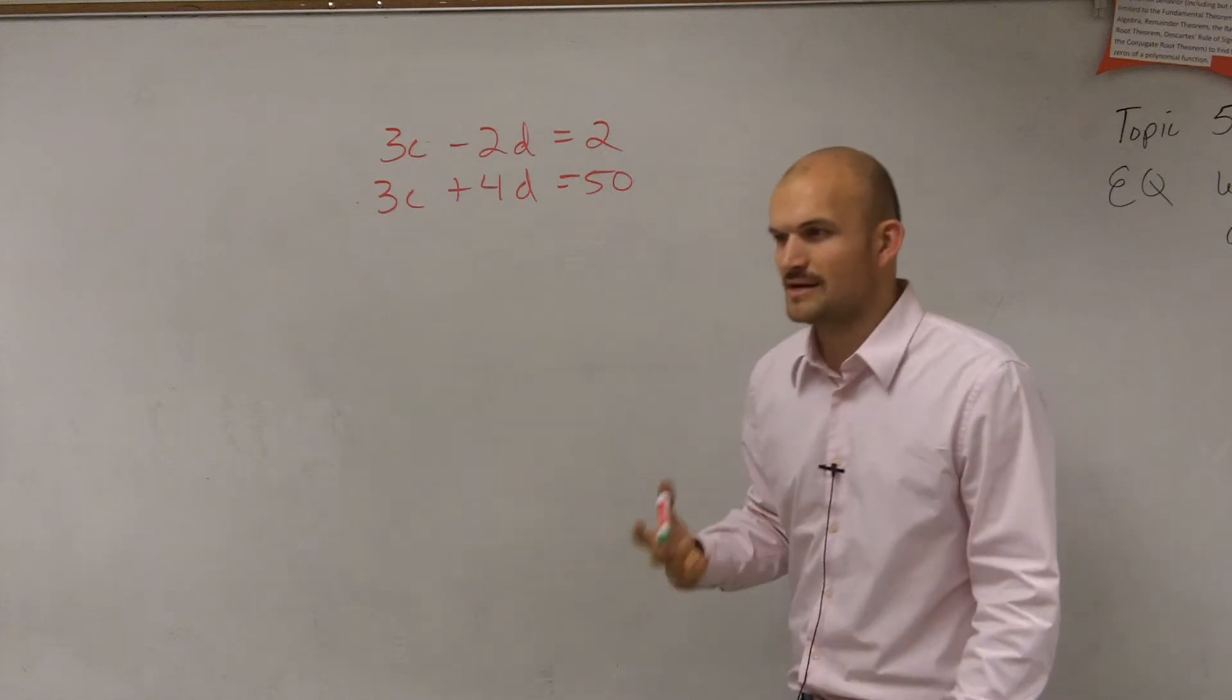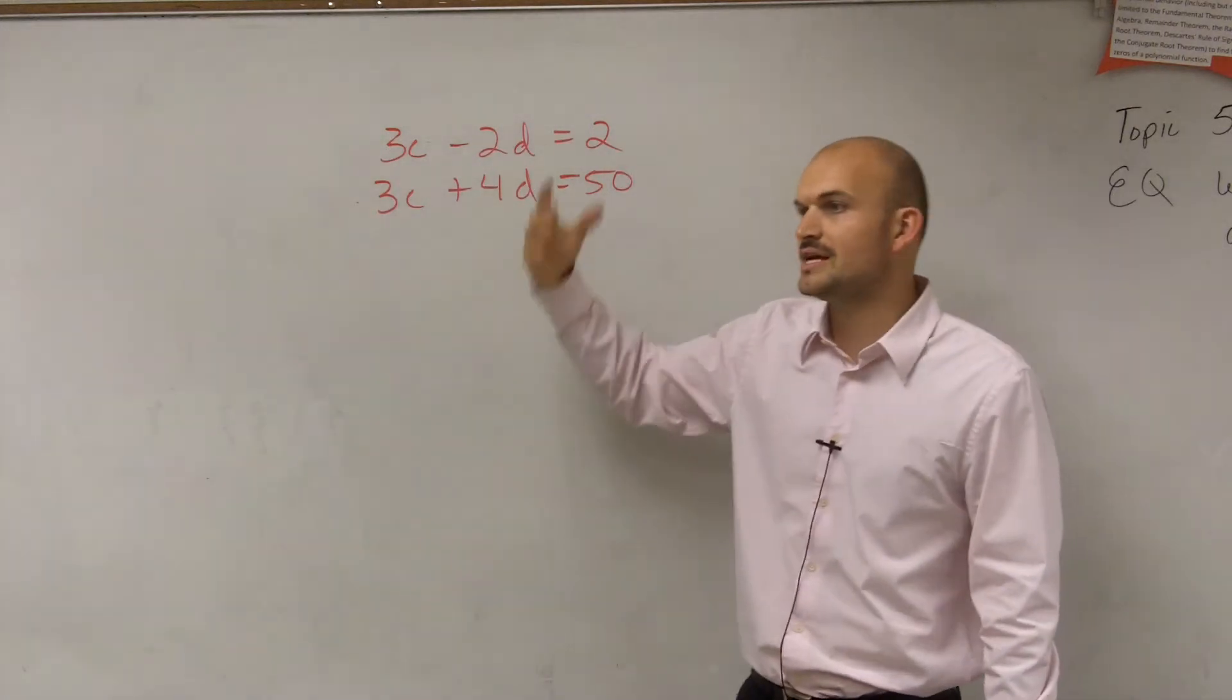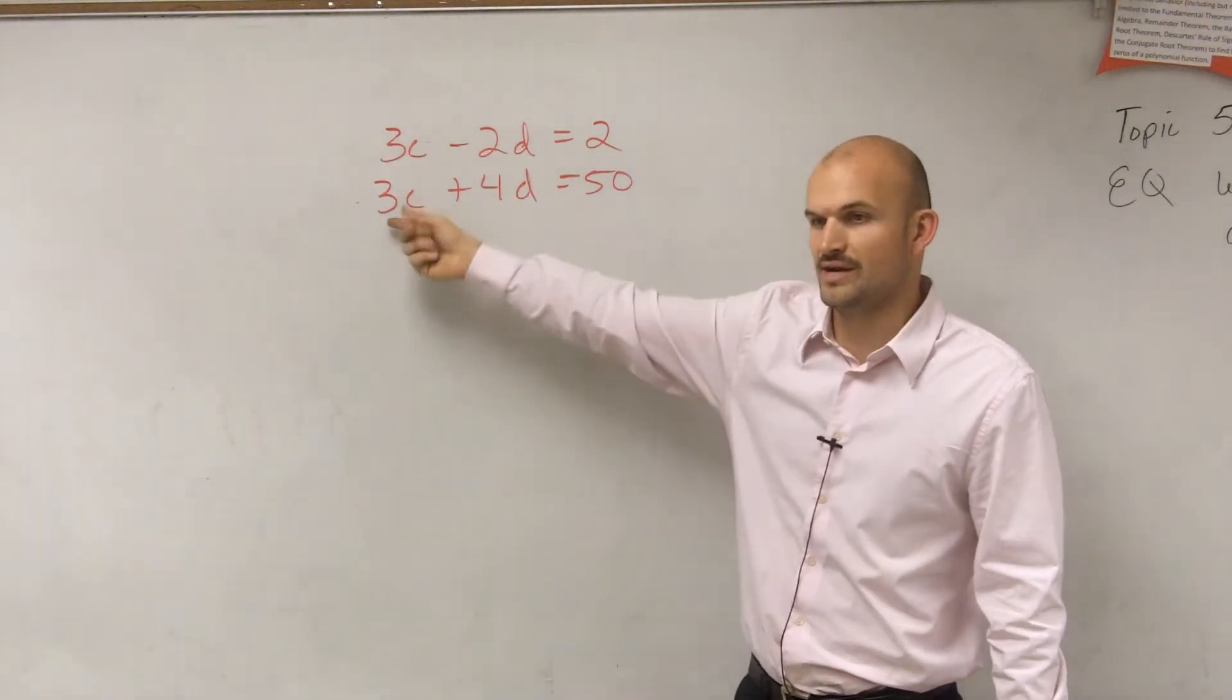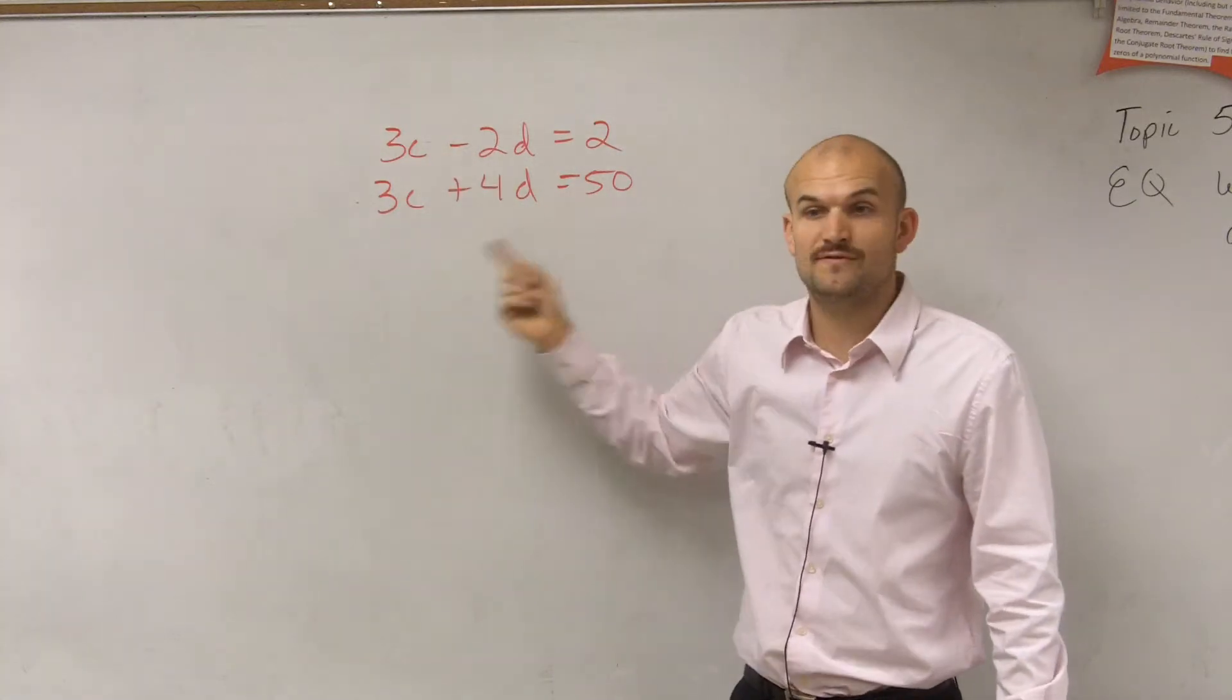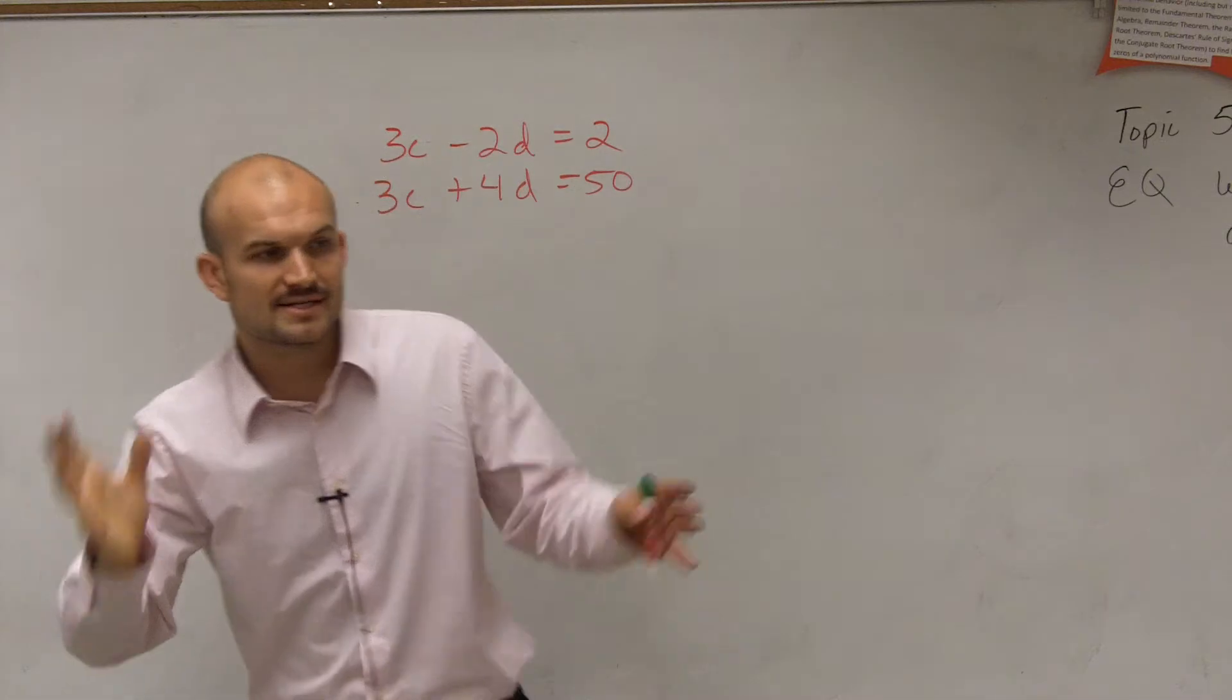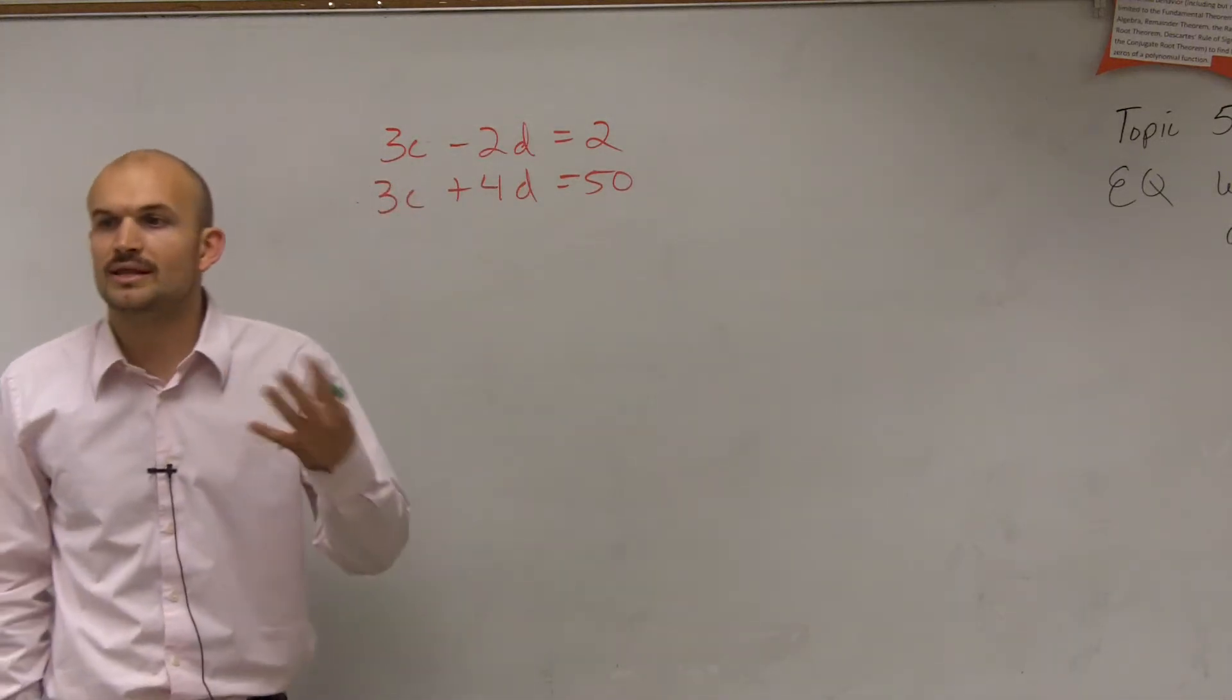And substitution, I'd be careful on doing substitution because the first thing we look for is if a variable had a coefficient, the number in front of the variable, of 1 or negative 1. Well, since we don't have a coefficient of 1 or negative 1, substitution is still possible, but it's going to be a little bit more difficult to algebraically work through. So let's look through elimination.